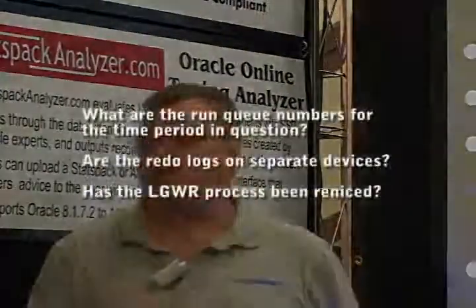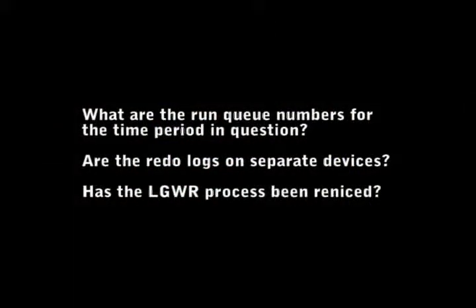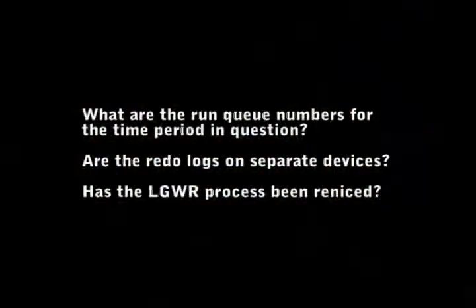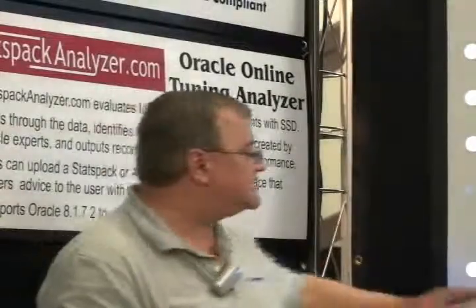Some questions you may ask of your system people: Are the run queue numbers showing that the database is experiencing not only CPU but write stress? Are there redo logs on separate devices — have they been moved to optimize their write profile? Has the log writer process been re-niced so that it gets a majority of CPU since other processes will wait for it? If the run queue is small, redo logs are properly located, and log writer has priority, then latency is your issue, and at that point the TMS write accelerator should move to the starting line for your solution.